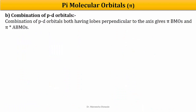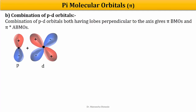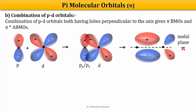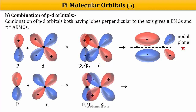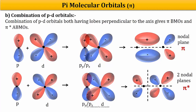A second combination for pi molecular orbitals involves one P orbital and one D orbital, where both orbitals have their lobes perpendicular to the internuclear axis. The plus-plus and minus-minus signs coming together give a pi bonding molecular orbital. The other combination gives a pi antibonding molecular orbital. In the bonding molecular orbital there is one node, while in the antibonding molecular orbital there are two nodes.